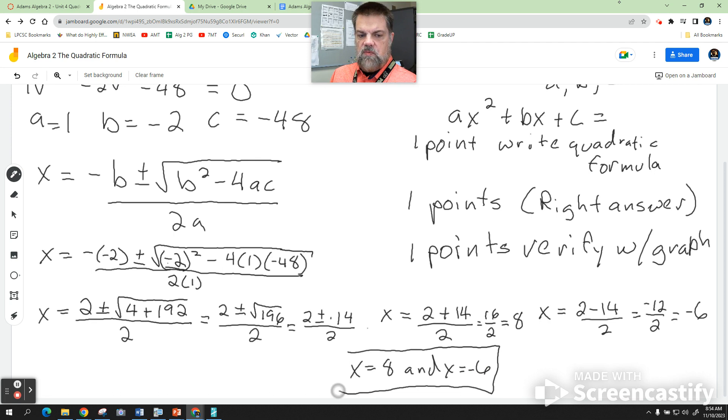Those are our - now do you guys remember all the names for this? That's our solution. Those are our zeros. They're the roots - why are they the roots? Because I took a square root. And they are also our x-intercepts. So when I go to graph this thing, where do you expect this to cross the x-axis? At x equals 8 and x equals negative 6.